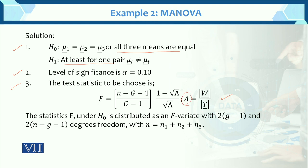The F statistic under H0 is distributed as F with degrees of freedom 2(G-1) and 2(N-G), where N equals N1 plus N2 plus N3, which we add up to get total N.